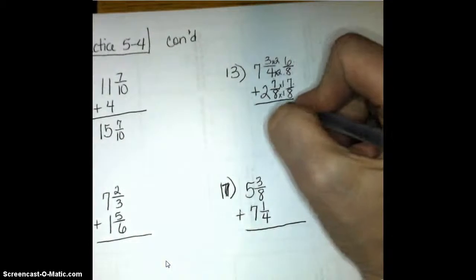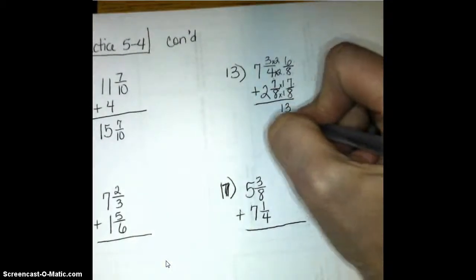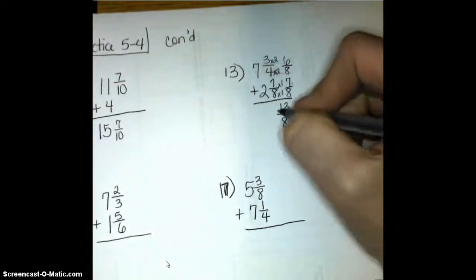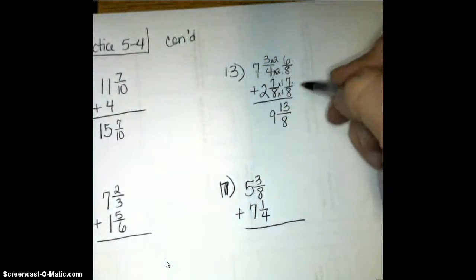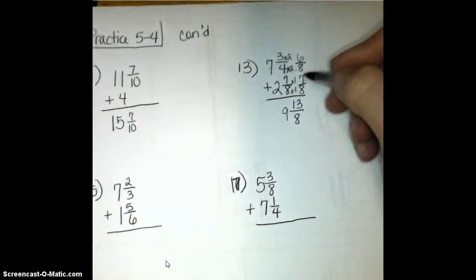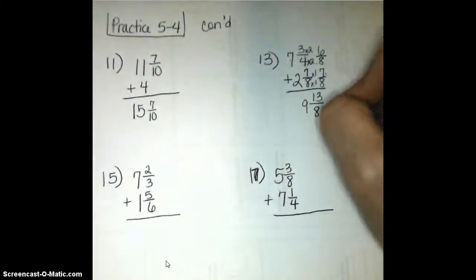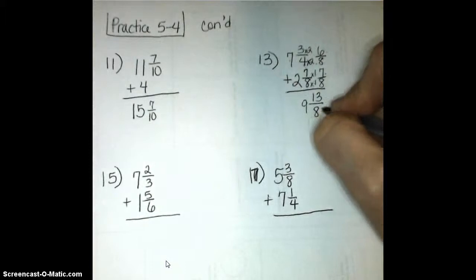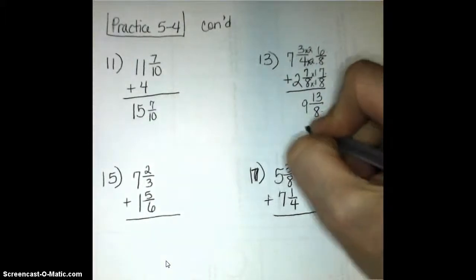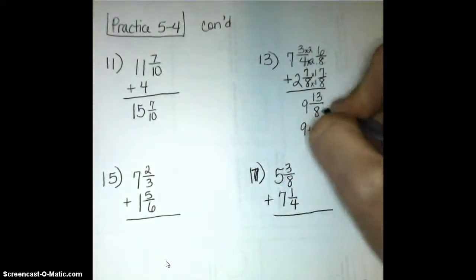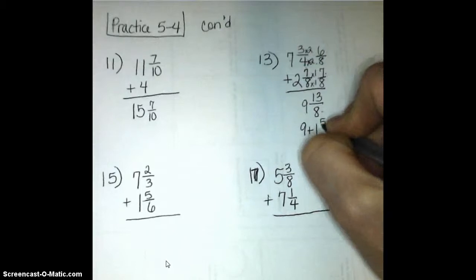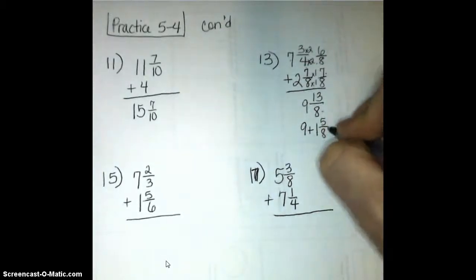6 eighths plus 7 eighths gives me 13 eighths, and my whole number 7 plus 2 is 9 and 13 eighths. Now, the problem with that is that this is an improper fraction. This is more than one whole, so this is going to be another name for 1 and 5 eighths because this 1 is 8 eighths, right? And 5 eighths more makes that 13 eighths.